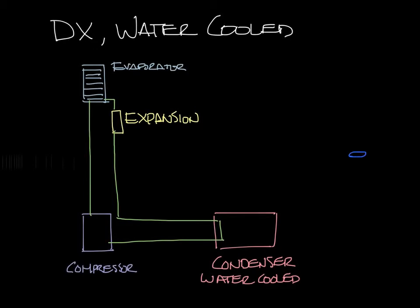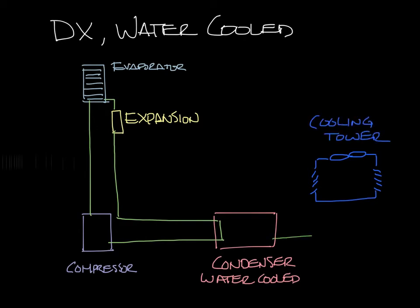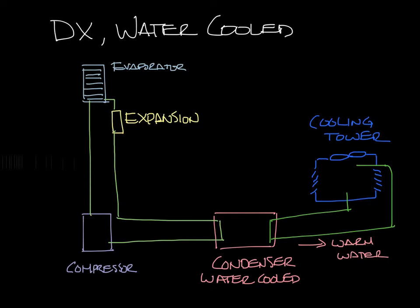In our water-cooled system, you also need a cooling tower. The water that is heated up in the condenser travels to the cooling tower. The cooling tower has a fan to draw air across water from the condenser. This causes some of the water to evaporate and cool, and the water falls to the bottom of the tower to the sump, and that water goes back to the condenser to start the process all over again.